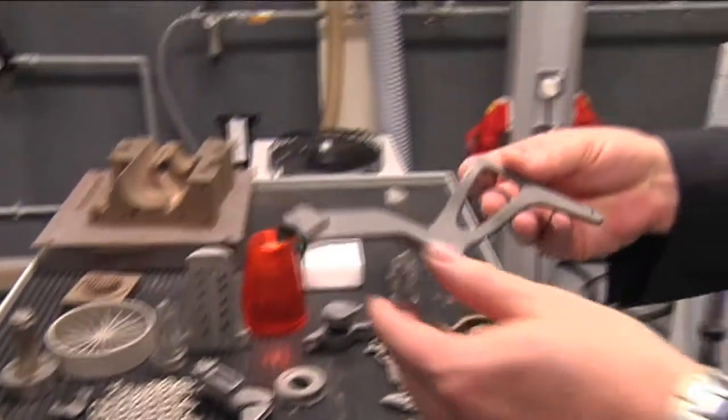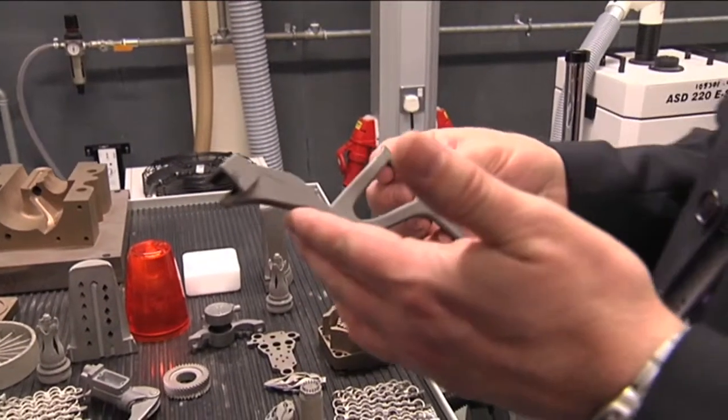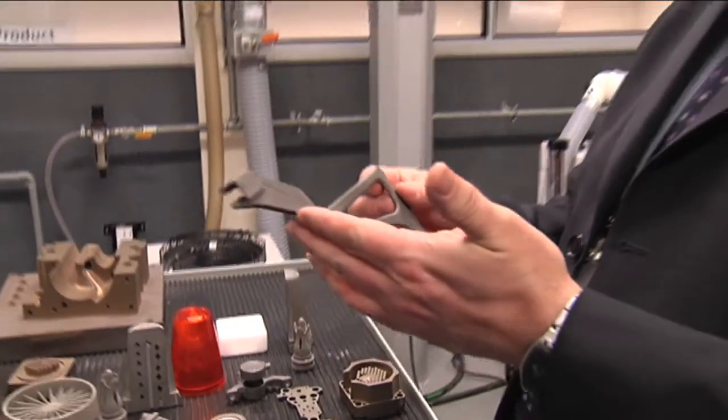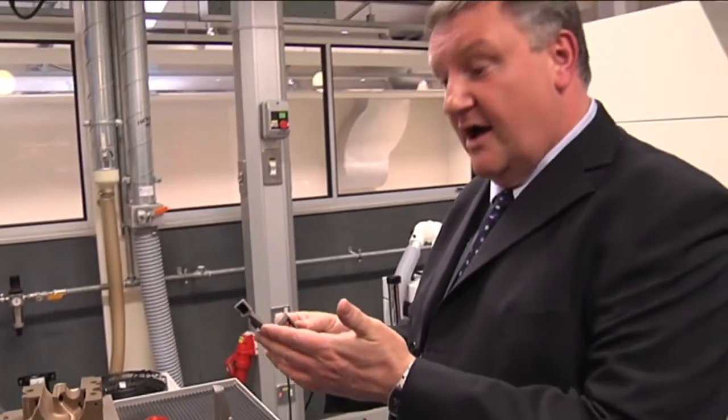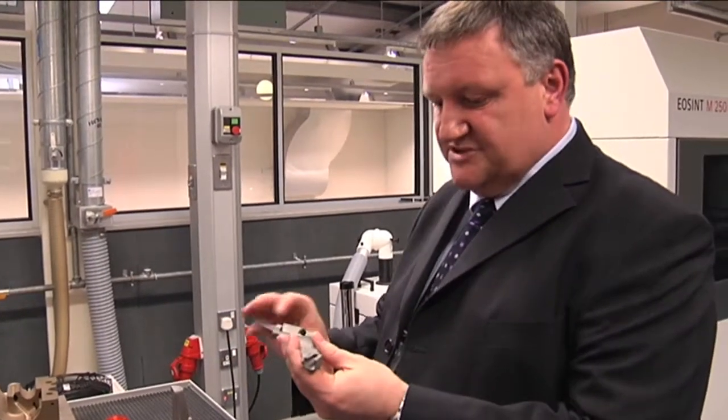This component here which is made in titanium is actually a flappy paddle gear change for an Aston Martin and was made initially as prototype parts to enable them to develop the vehicle.